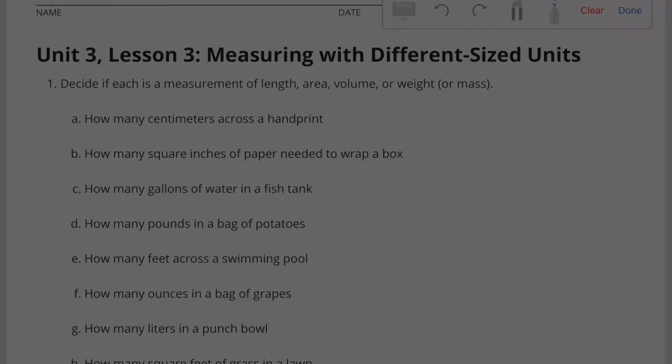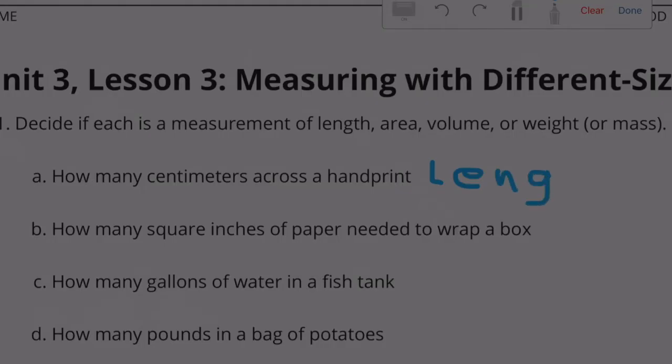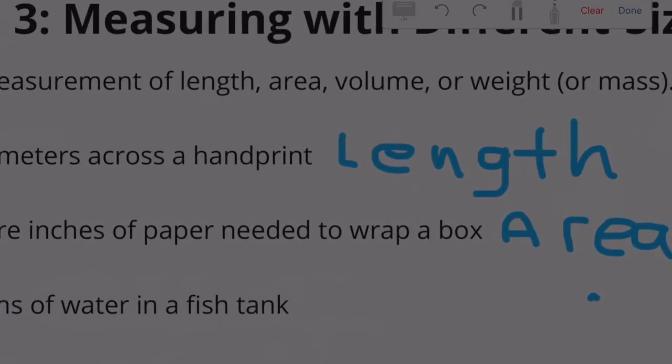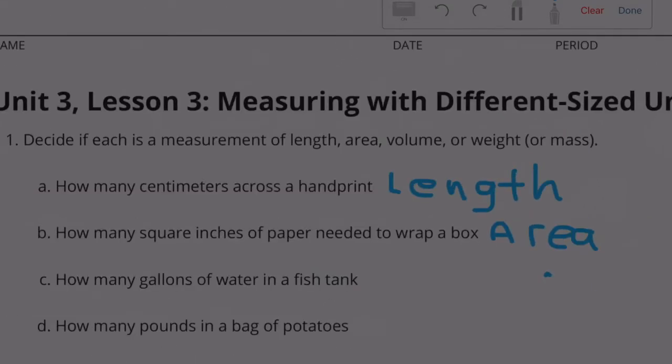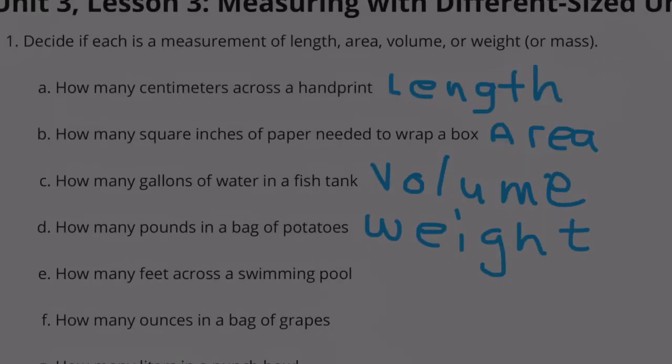Part A: How many centimeters across a handprint? That would be length. Part B: How many square inches of paper needed to wrap a box? That would be area. Part C: How many gallons of water in a fish tank? That would be volume. Part D: How many pounds in a bag of potatoes? That would be weight.